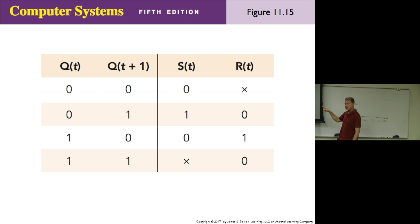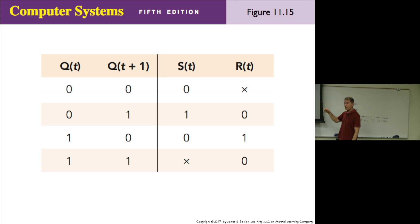Here is the excitation table for the SR flip-flop in figure 11.15. For example, if Q equals zero and you want Q to be zero at time t+1, what must S and R be? SR could either be 0,0 — the state does not change, it stays zero — or 0,1, which resets it, but that will still keep it zero. And remember how that worked?